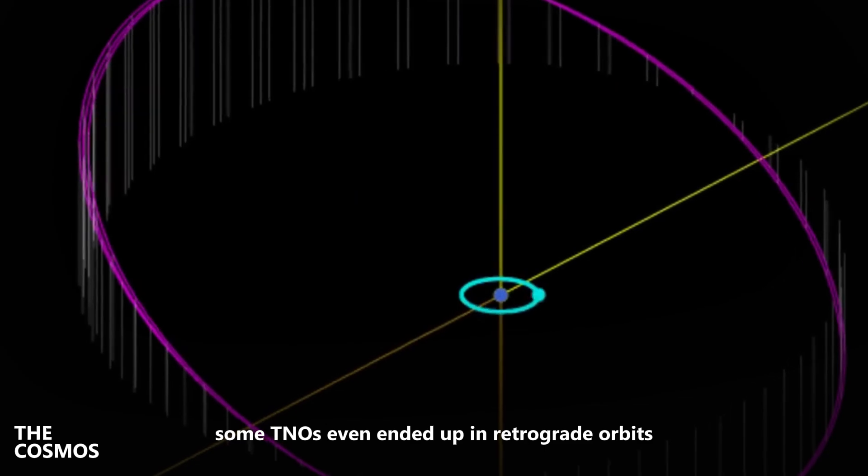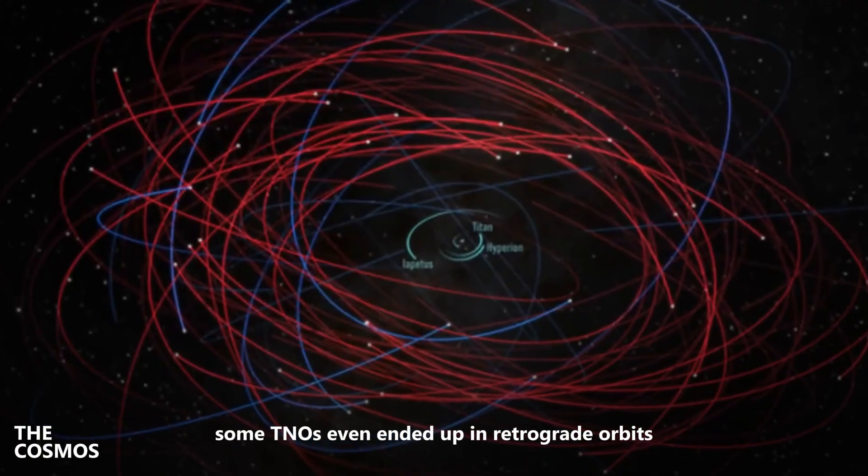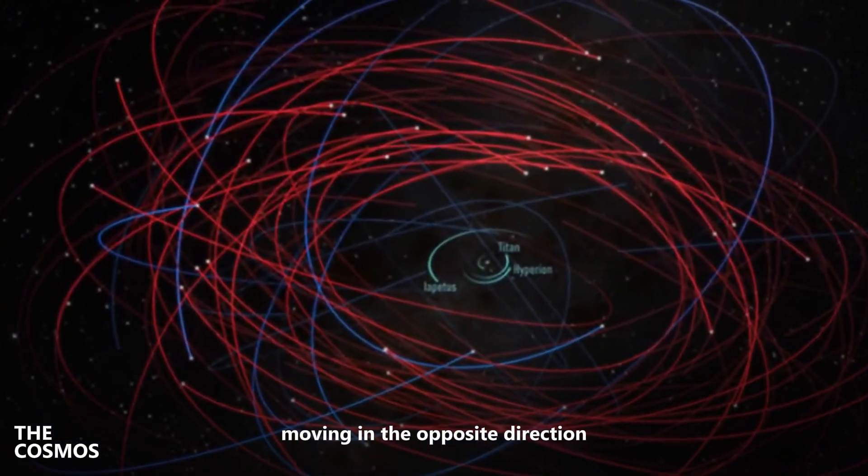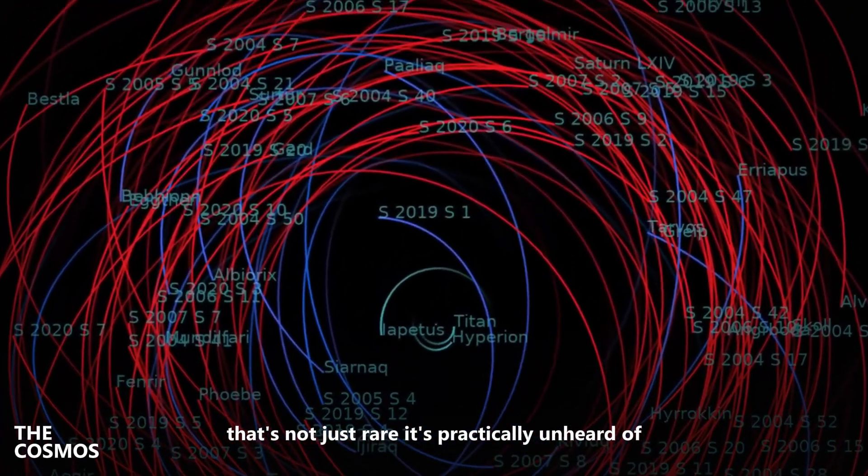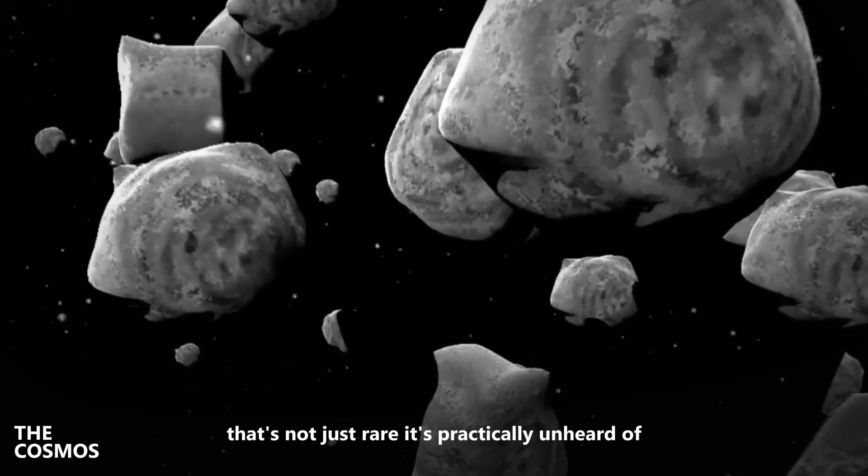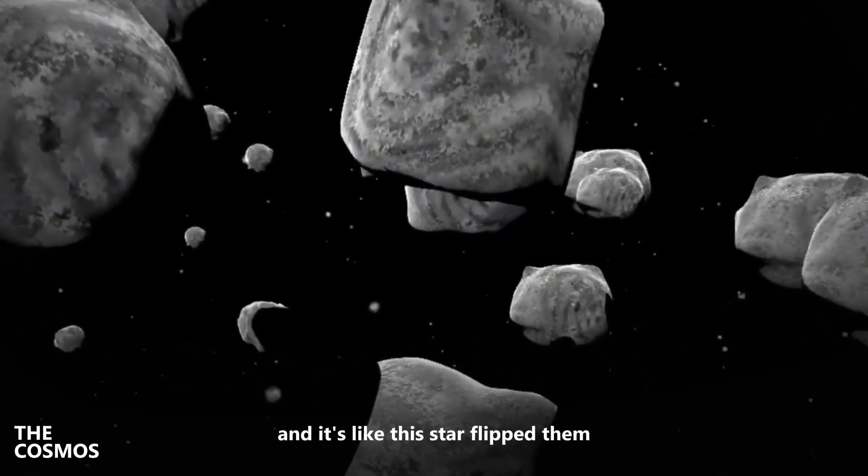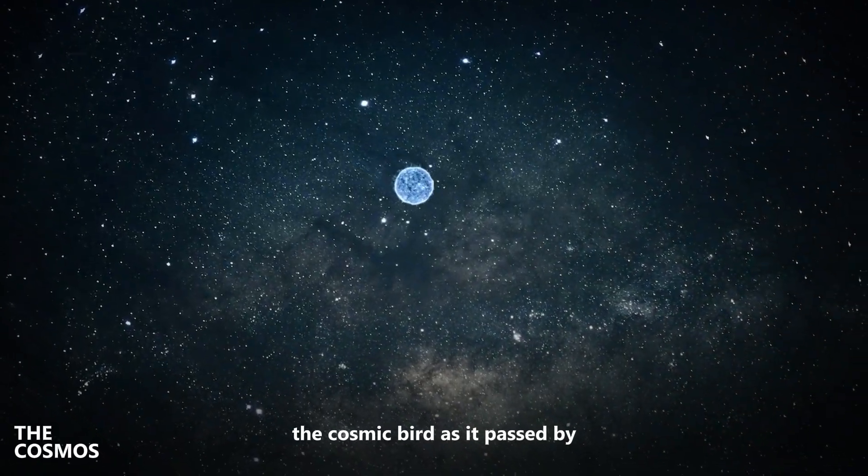And get this: some TNOs even ended up in retrograde orbits, moving in the opposite direction to everything else in the solar system. That's not just rare, it's practically unheard of—it's like this star flipped them the cosmic bird as it passed by.